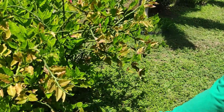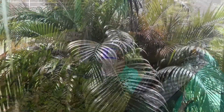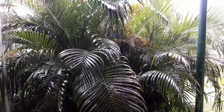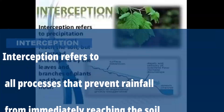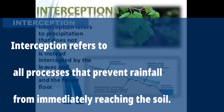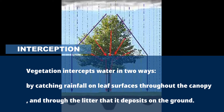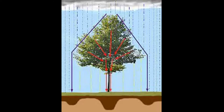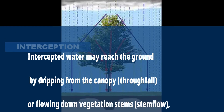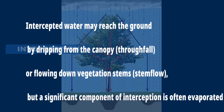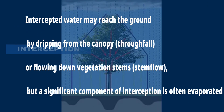There is no water on the soil. Interception refers to all processes that prevent rainfall from immediately reaching the soil. Vegetation intercepts water in two ways: by catching rainfall on leaf surfaces throughout the canopy, and through the litter that is deposited on the ground. Intercepted water may reach the ground by dripping from the canopy, also known as throughfall, or flowing down vegetation stems, also known as stemflow, but a significant component of interception is often evaporated.